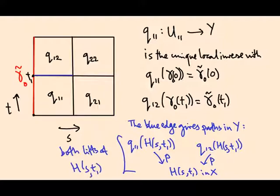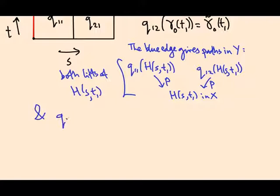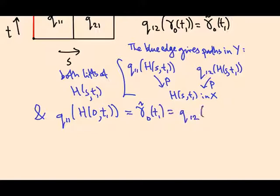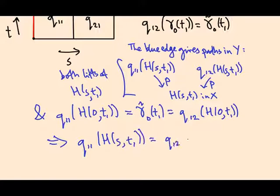And they're both lifts of h(s, t_1), and moreover at this point here they agree because they agree with gamma 0 tilde at t_1. So q_11 of h(0, t_1) equals gamma tilde 0(t_1), that equals q_12 of h(0, t_1). So you have two different lifts of the same path that agree at the initial point. Well they have to be the same, so that tells us q_11 of h(s, t_1) equals q_12 of h(s, t_1) by the uniqueness of path lifting.